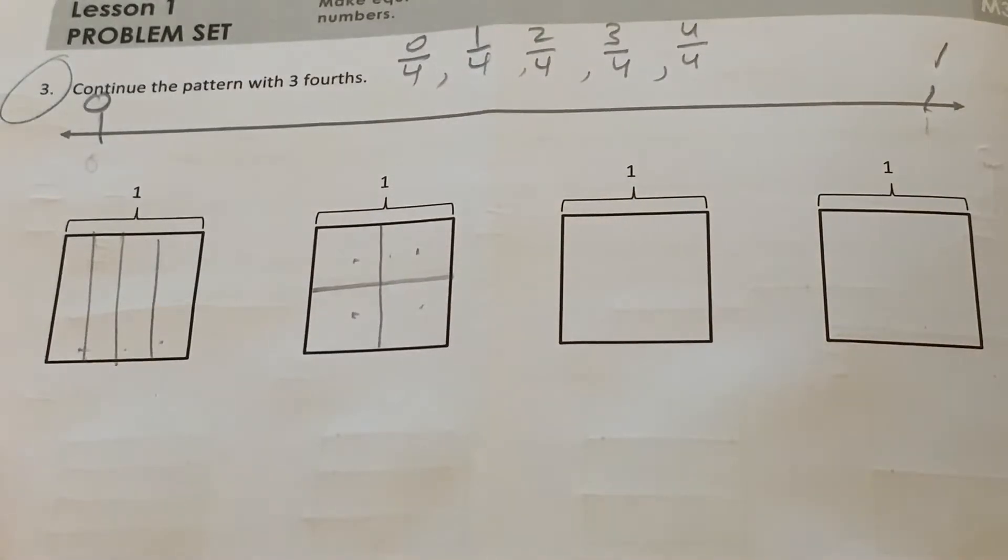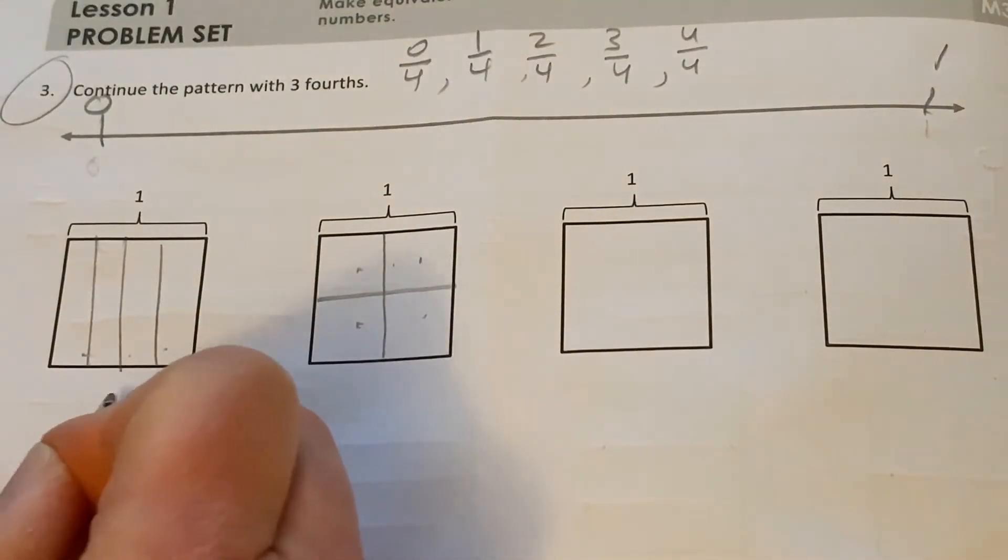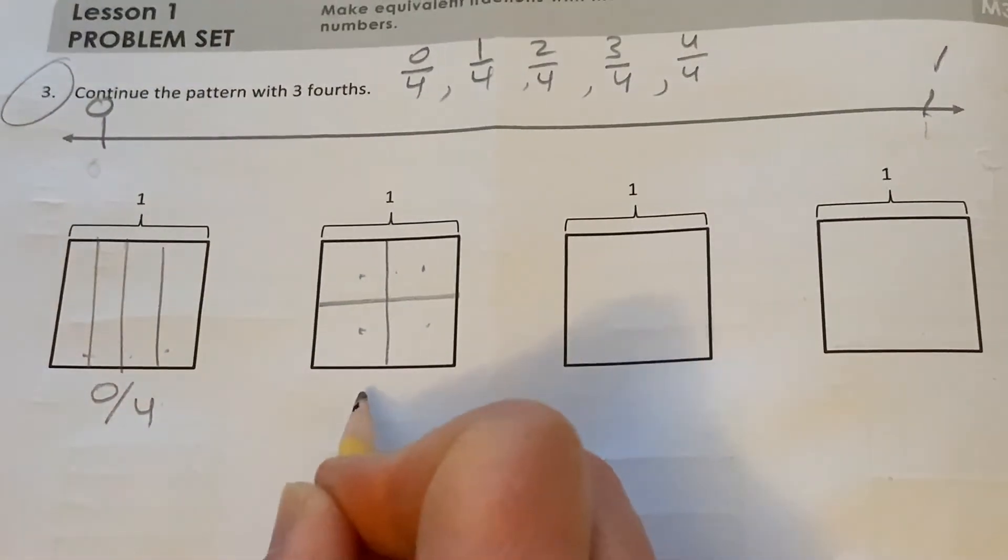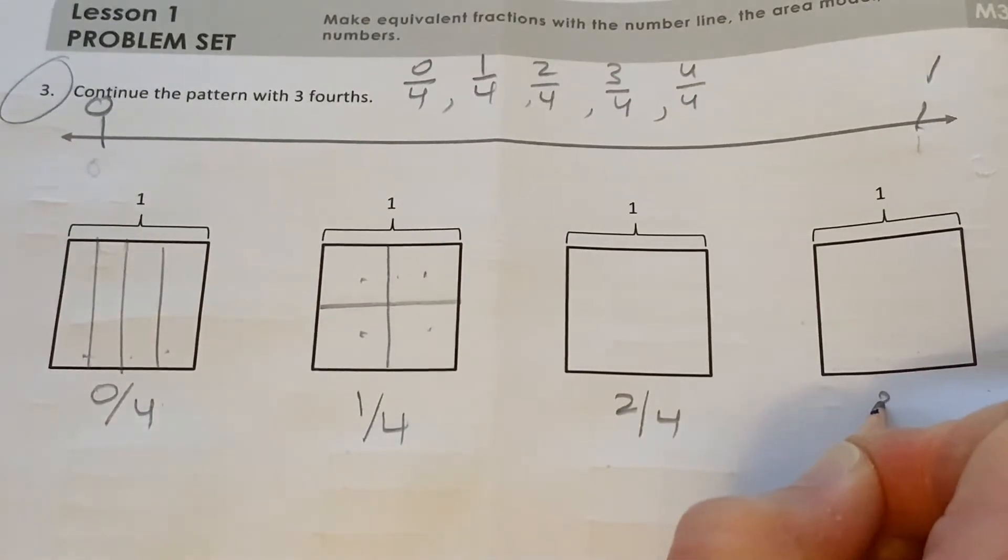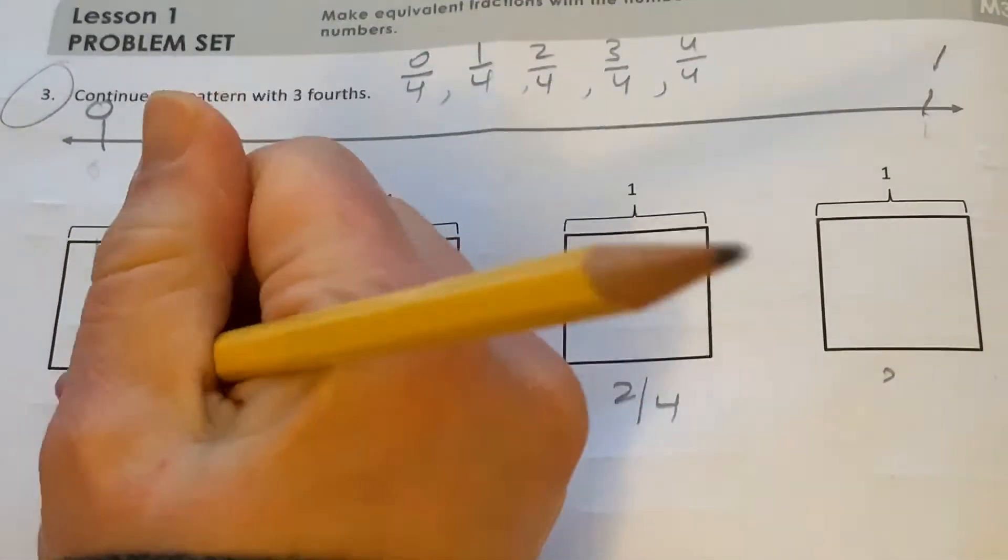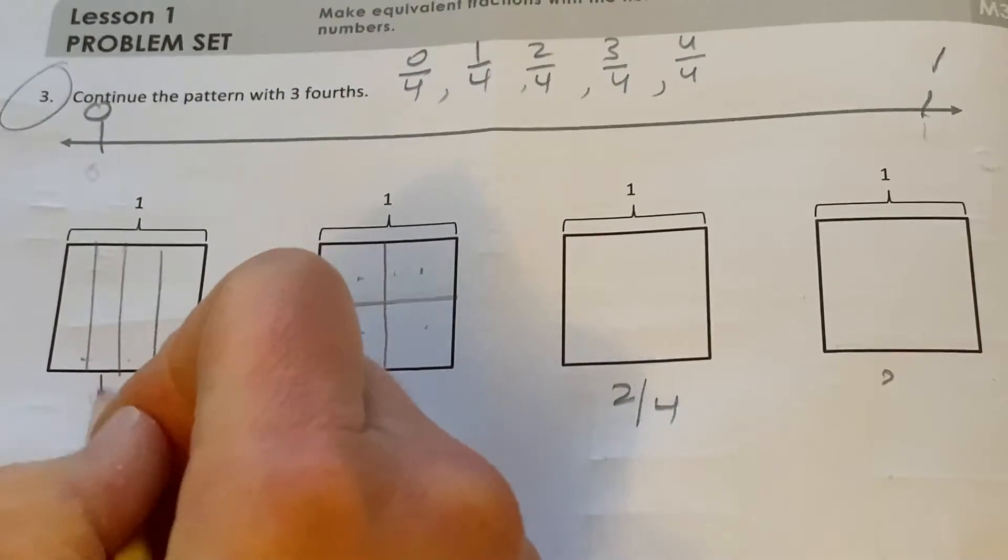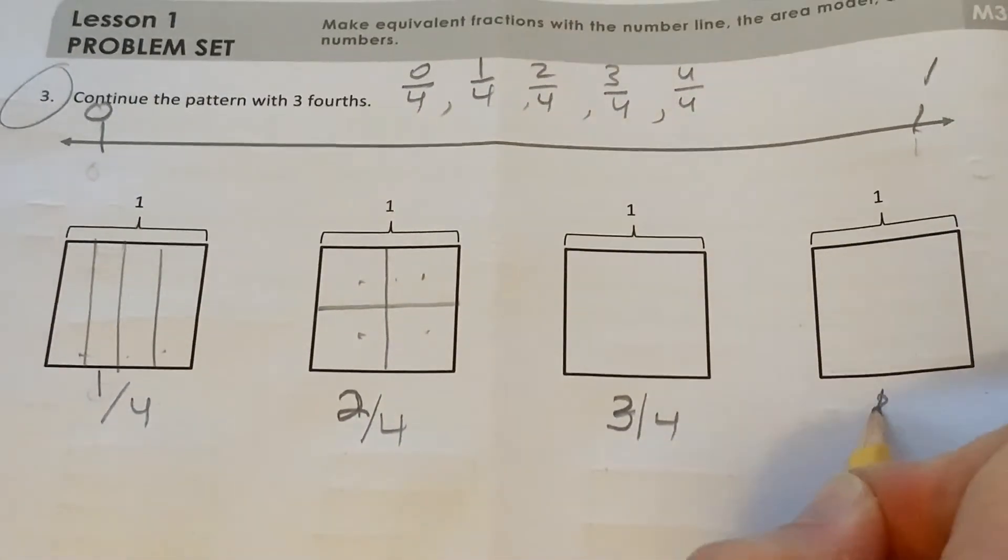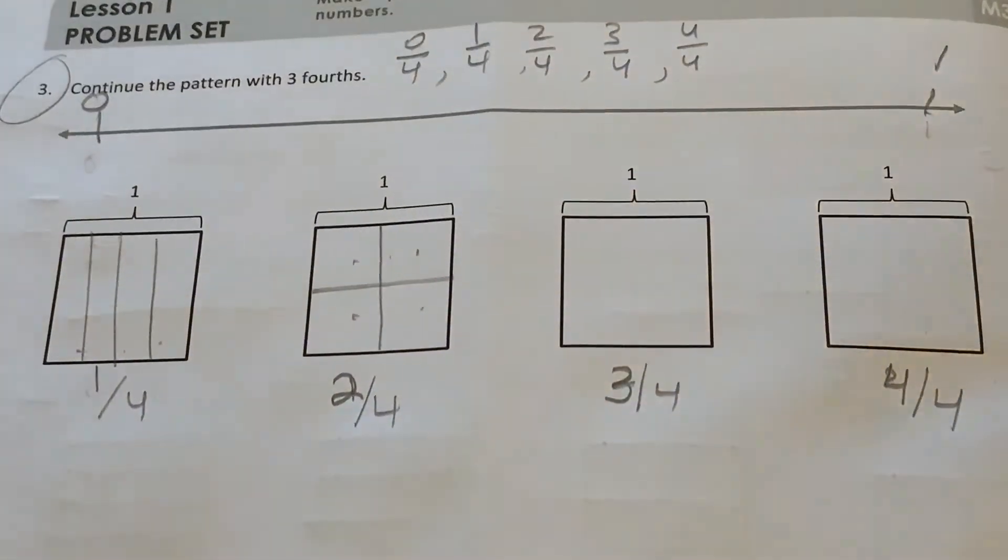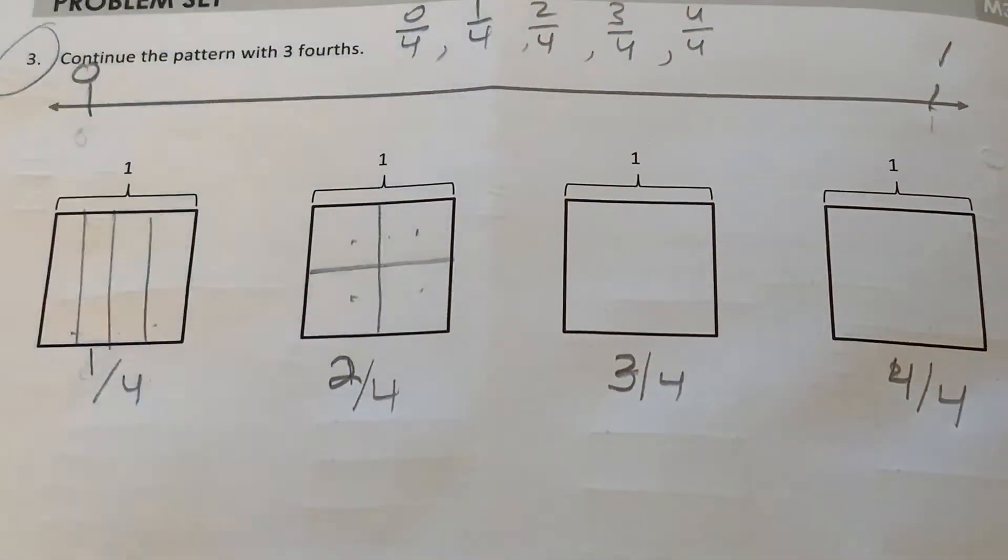So, this box should show, this one should show zero fourths. This one should show one fourth. This one should show two fourths. And this one, oh, actually, I'm sorry. I'm going to erase this. This one shows one fourth, two fourths, three fourths, four fourths.